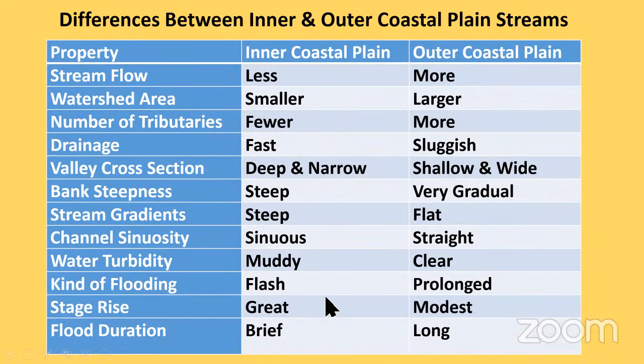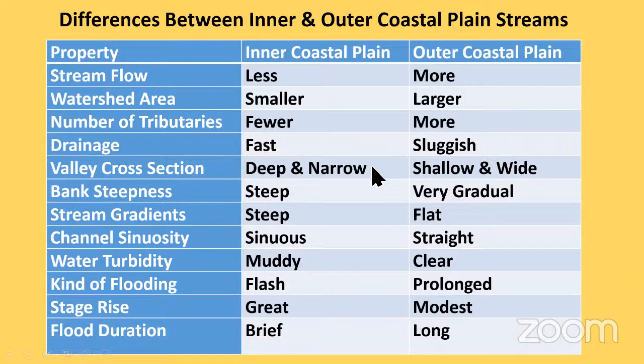To summarize: intercoastal plain has less stream flow; outer coastal plain has more. Watershed area is smaller in the intercoastal plain, larger in the outer coastal plain. Fewer tributaries in the intercoastal plain, more in the outer coastal plain. Drainage is fast in the intercoastal plain, sluggish in the outer coastal plain. Valley cross sections are narrow and deep in the intercoastal plain, shallow and wide in the outer coastal plain. You get a whole bunch of properties showing that streams in the intercoastal plain look different from those in the outer coastal plain.